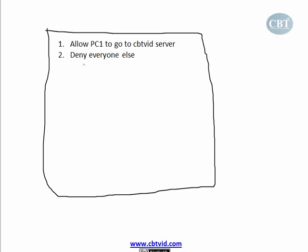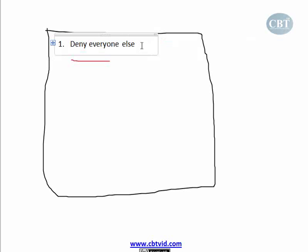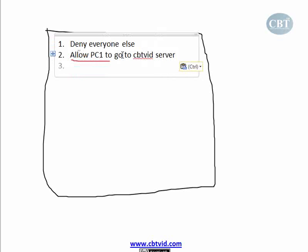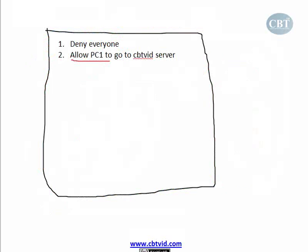Now look at the order. If I change this and write 'deny everyone else' first, then 'allow PC1' second — when the router receives a packet, it checks the source IP address. It hits 'deny everyone' first. PC1 is part of everyone, so it gets blocked. The packet matched the first rule, so the router never reaches the second rule.